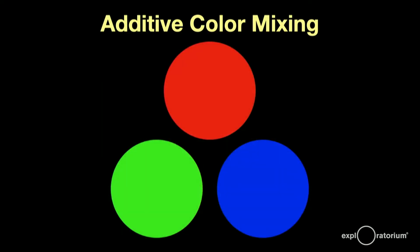These are the three primary colors in additive mixing: red, green, and blue. These roughly correspond to the three types of cone receptors in your eye.